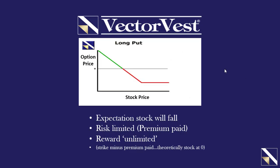Conversely, the put option — if you enter into a put option as the buyer, your expectation is that that stock or ETF will fall. Your risk is limited to the premium that you paid. As the stock price falls, you'll see the value of your option price rises. The strike price minus the premium paid is your max reward — theoretically the stock could go to zero and that would be your max profit. Put options provide the owner the right to sell 100 shares of a stock at a certain price by a certain date, giving the owner the right to put that stock to the seller of the put option.